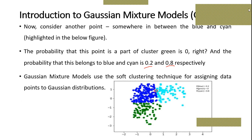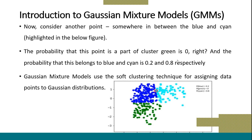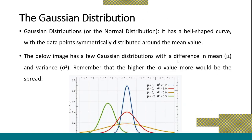The Gaussian Mixture Model uses the soft clustering technique for assigning data points to a Gaussian distribution. To solve this problem, we use the Gaussian distribution. What is the Gaussian distribution? The Gaussian distribution is also called the normal distribution. It is a bell-shaped curve with data points symmetrically distributed around the mean value. There is a difference in mu, which is the mean, and the variance alpha squared. Remember that the higher the alpha value, the more will be the spread.